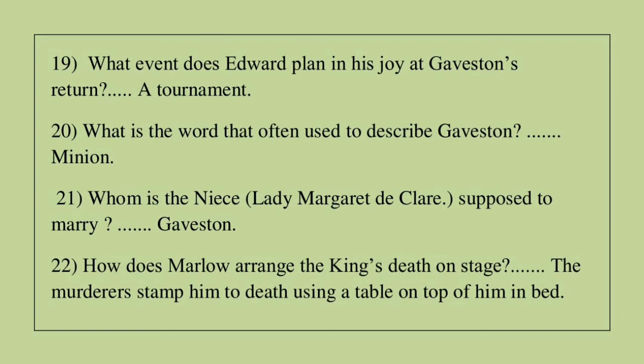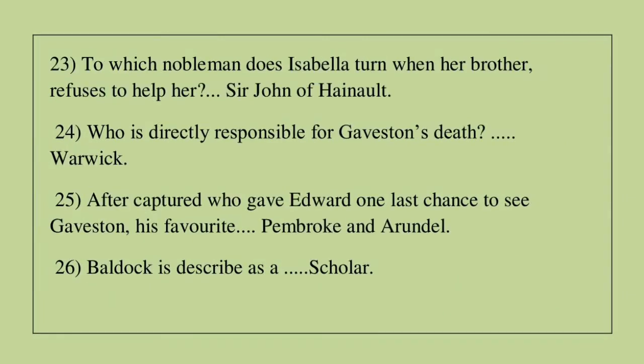Question 21: Whom is the king's niece supposed to marry? The answer is Gaveston. Question 22: How does Marlowe arrange the king's death on stage? The murderer stamps him to death using a table on top of him in bed. Question 23: To which nobleman does Isabella turn when her brother refuses to help her? The answer is Sir John of Hainault. Question 24: Who is directly responsible for Gaveston's death? The answer is Warwick. Question 25: After capture, who gave Edward one last chance to see Gaveston? The answer is Pembroke and Arundel.